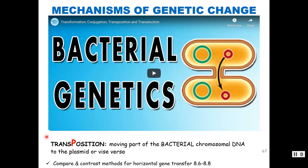This video will go through the different types of horizontal gene transfer. Transposition refers to how genes move between the chromosome and a plasmid. A gene in a chromosome can move by transposition into a plasmid. Then we'll look at transformation, transduction, and conjugation — the three modes of horizontal gene transfer.